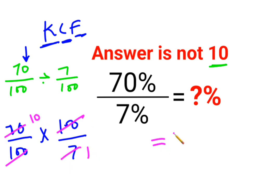Now final answer is supposed to be what? Actually the answer will be 10. But because they are asking the answer in terms of percentage, it has to get multiplied by 100. Final answer is supposed to be 1000%.